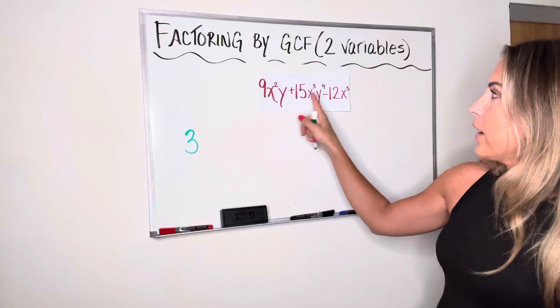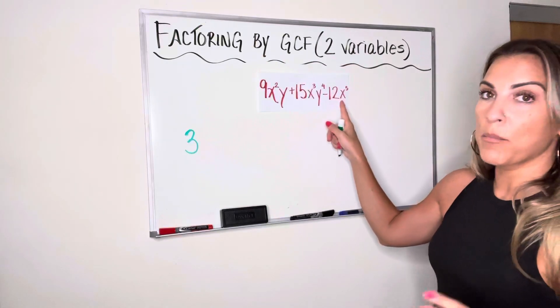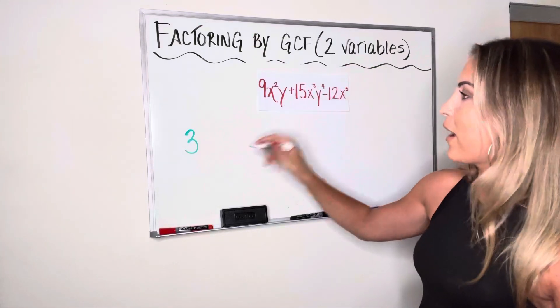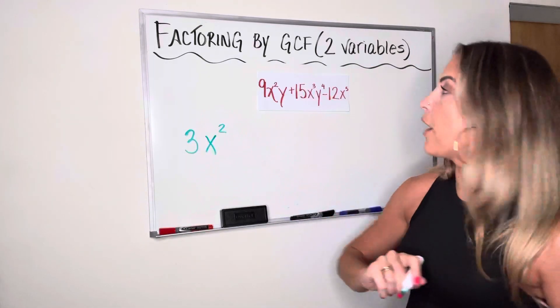For x's, I have x squared, x to the third, and x to the fifth. Remember the shortcut was take the smallest exponent. So I have a 2, a 3, and a 5. So x squared is part of the GCF.